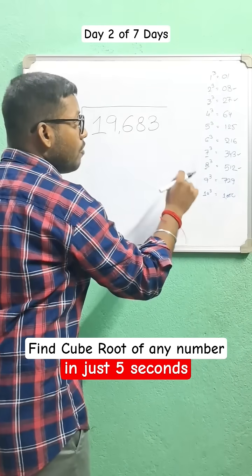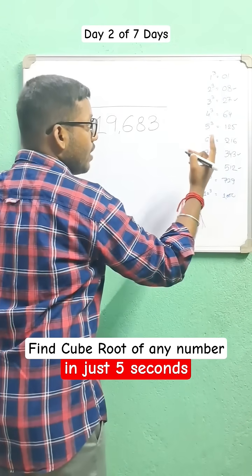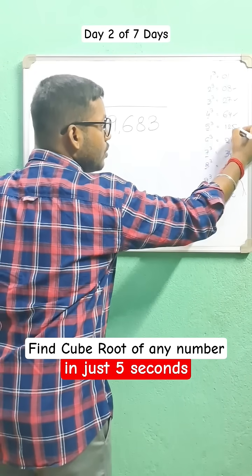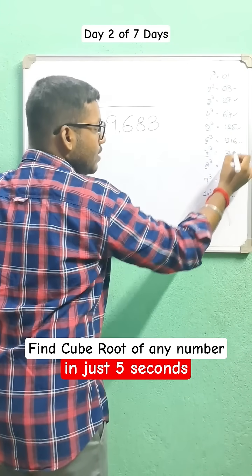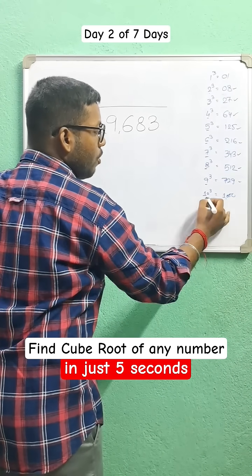But what about other numbers? The cube of other numbers ends with itself. For example, cube of 4 ends with 4, cube of 5 ends with 5, cube of 6 ends with 6, cube of 9 ends with 9, cube of 10 ends with 0.